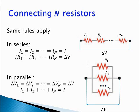The same rules for connections in series or in parallel also apply when we connect more than two elements. Suppose we have n resistors connected in series. In this case, the positive terminal of R2 is connected to the negative terminal of R1, the positive terminal of R3 is connected to the negative terminal of R2, and so on. The current through these n resistors is the same: I1 = I2 = I3 = ... , while the potential differences across resistors add up: I·R1 + I·R2 + ... + I·Rn = ΔV.